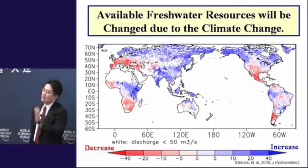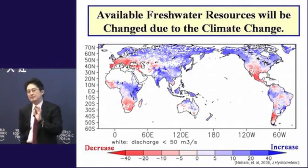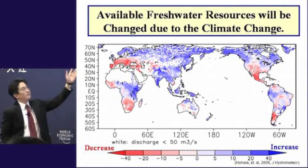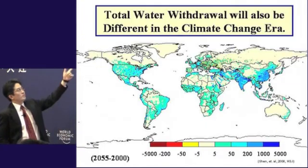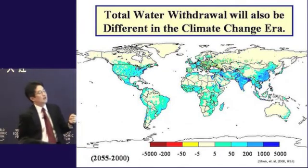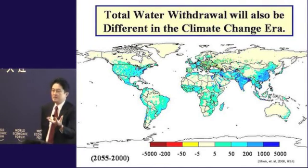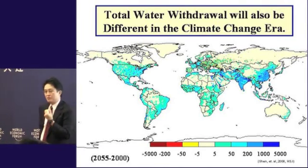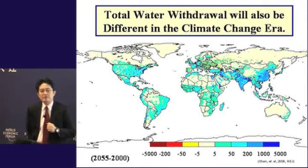We are facing two problems nowadays, and the situation will be exacerbated due to climate change and urbanization. Both of them will worsen the situation and increase the risk of floods, droughts, and storm surges. This is an estimation of the change of available fresh water resources compared to the 20th century to the 21st century.